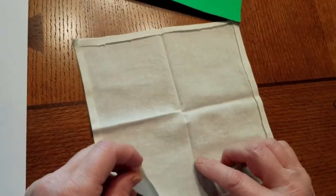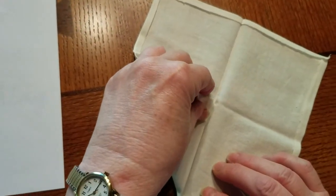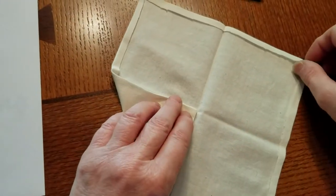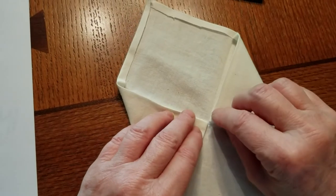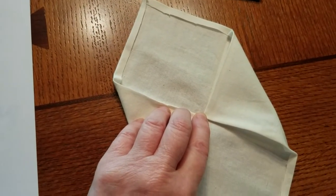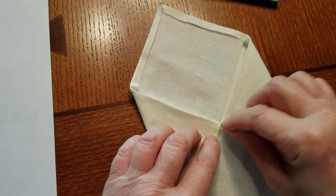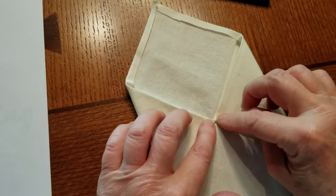So what I'm going to do is I'm going to start by taking this point and bring it into the middle and this point and bring it into the middle. And I've got a long piece of thread knotted and I'm going to take and sort of stitch this in place just a little bit.